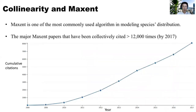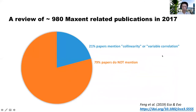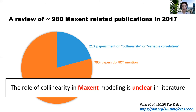Now I want to transition to collinearity and MaxEnt. MaxEnt is one of the most commonly used algorithms in modeling species distribution or ecological niche, and major MaxEnt publications have been cited many times. We did a simple survey of papers published in 2017, looking at approximately 980 MaxEnt-related publications. We found that approximately 20% of the papers talk about collinearity or variable selection, while the majority — approximately 80% — never talk about collinearity or variable selection at all. This suggests that the role of collinearity in MaxEnt modeling is still unclear in the published literature.